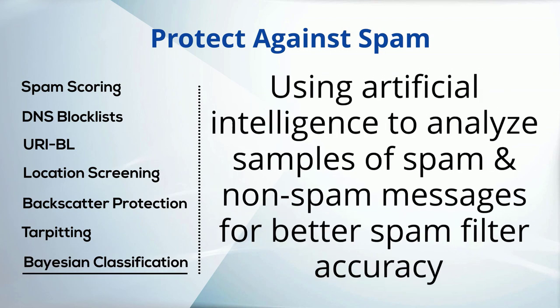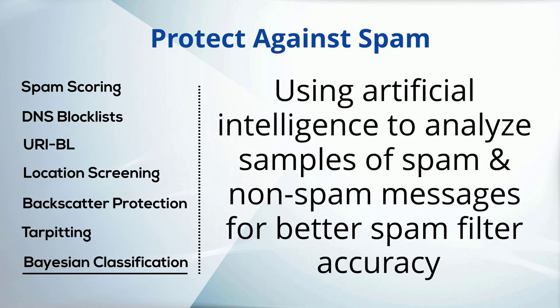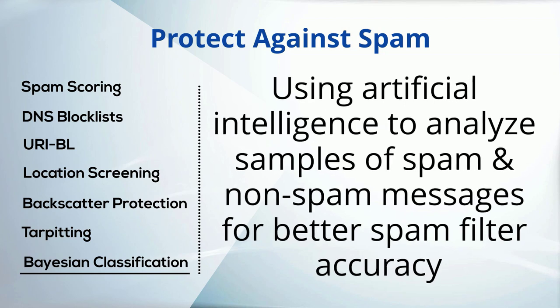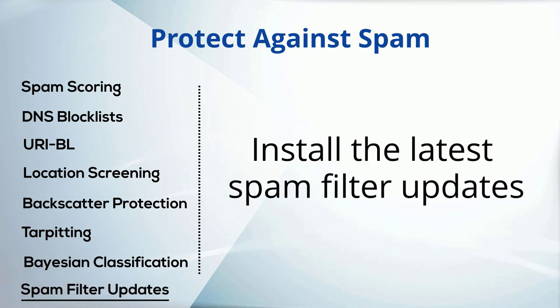Use Bayesian Classification to improve spam filter accuracy. Bayesian Classification uses artificial intelligence to analyze samples of spam and non-spam messages, which are fed to a database to train the spam filter to be more accurate based on your specific business needs. And regularly check for spam filter updates to ensure that you have the latest spam processing rules.